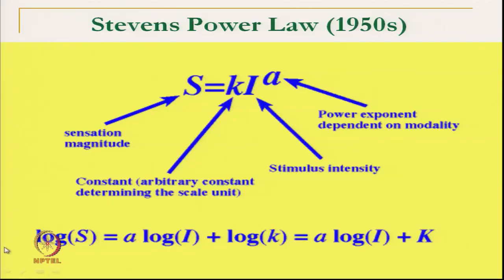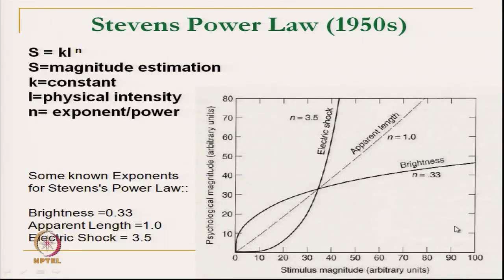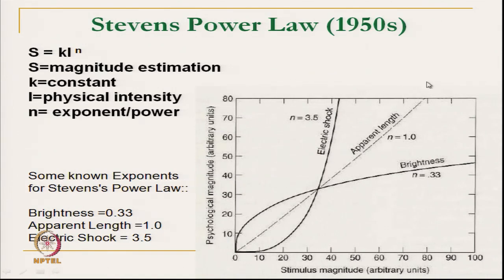Stevens' power law states that S is the magnitude of estimation of internal sensation, k is a constant, i is the physical intensity of physical attributes outside (such as brightness, apparent length, electric shock), and n is the exponent. In the power law, for different types of sensation — electric shock, brightness, apparent length — there are different relationships, with the value of n exponent defined for each. Some known exponents: for brightness n equals 0.33, for electric shock n equals 3.5.